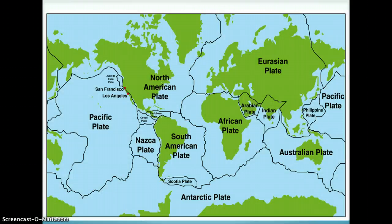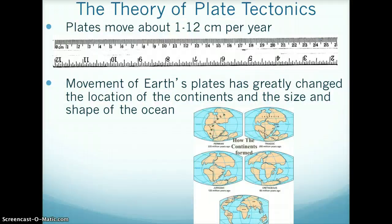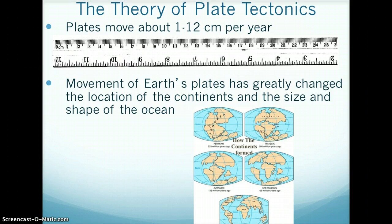This image shows the different plates. The movement of Earth's plates is very slow — they only move 1 to 12 centimeters per year. The movement of the plates has caused the location of the continents and the size of the oceans to greatly change through Earth's history. The image at the bottom shows how the oceans and continents have changed over the years.